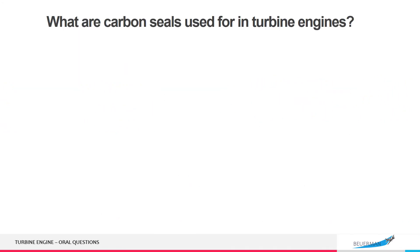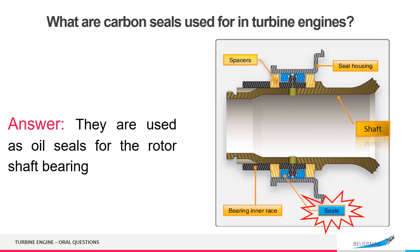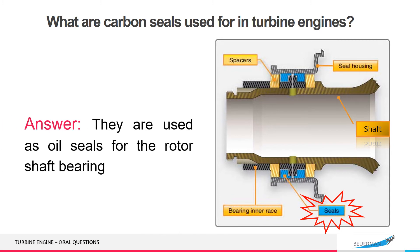What are carbon seals used for in turbine engines? They are used as oil seals for the rotor shaft bearing.